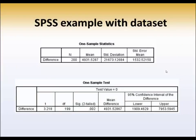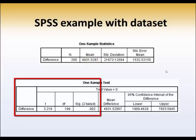Here are our SPSS results. On the top, we see the mean difference, 4,932 steps. Then, we have the t-value, 3.218, degrees of freedom 199, two-tailed significance or probability, p less than 0.002.